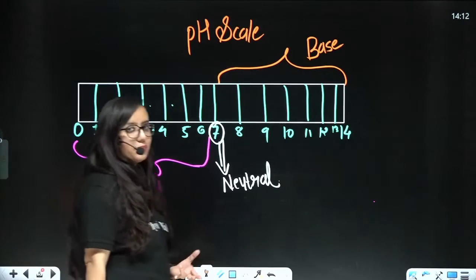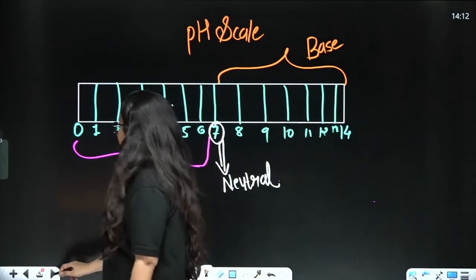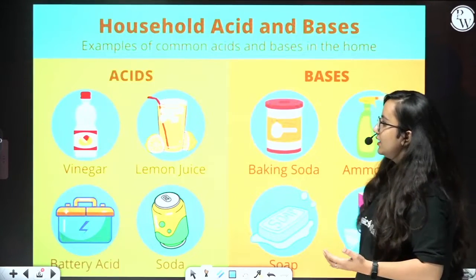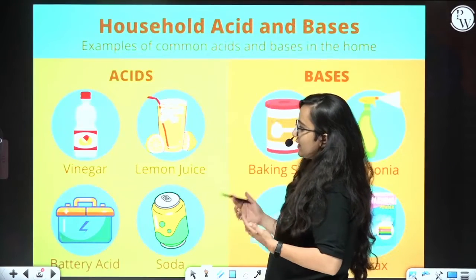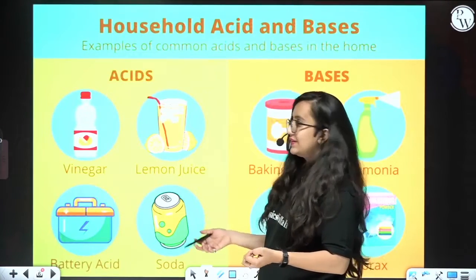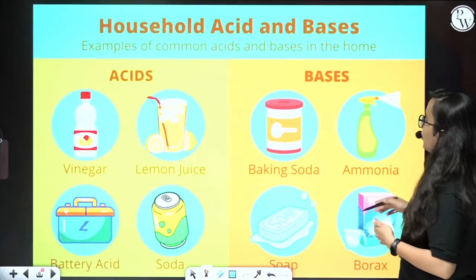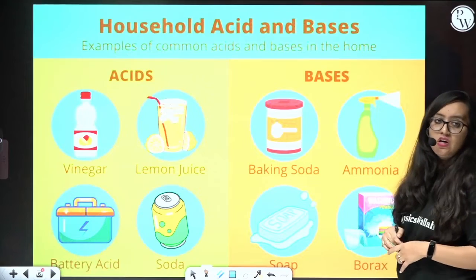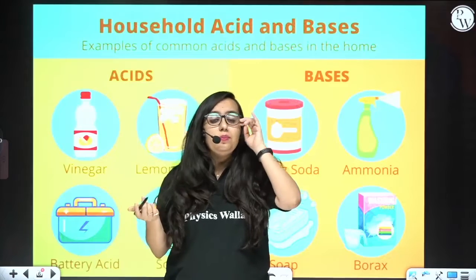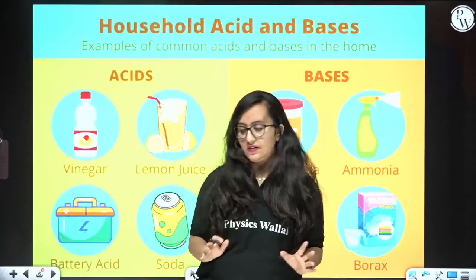This pH scale is also available in the market — it is a universal indicator. These are some household acids and bases. Vinegar has acetic acid. Lemon juice has citric acid. Battery acids have H2SO4, sulfuric acid. Baking soda, ammonia, soap, and borax have bases in them. So these are substances used in day to day life which we may not know contain acids and bases, but they do.